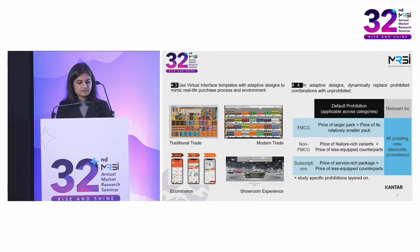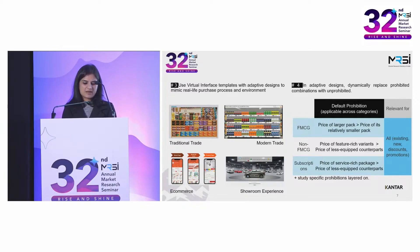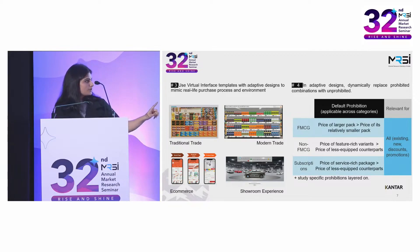Coming to our next principle: in the market, some general pricing rules apply across categories. For example, larger FMCG packs are never going to be cheaper than their smaller ones, and a similar hierarchy holds for feature-rich automotive variants or service-rich subscription packages. This hierarchy also applies with discounts and promotions. In order to scale up the solution, the idea is to create a repository of adaptive designs and dynamically replace prohibited combinations with unprohibited ones. You should always keep the default prohibitions and add any study-specific prohibitions if required.